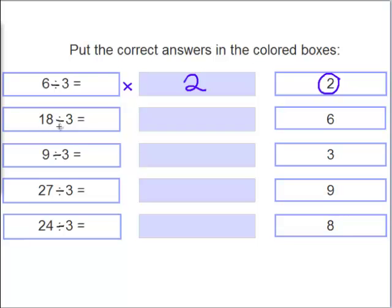Now, 18 divided by 3. What is 18 divided by 3? Yes, 6. 18 divided by 3 equals 6.